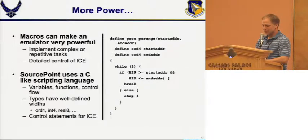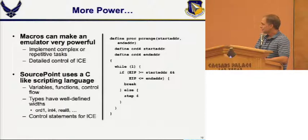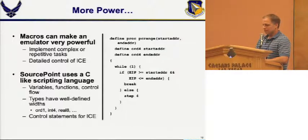Here's a simple example script illustrating standard language features: defining a function that takes typed arguments, an infinite while loop checking the EIP register to make decisions. In this case it's essentially a memory-range breakpoint — you call the function, give it a start and end address, say go, and it steps until it gets into the proper address range and stops. We step four instructions at a time to make it a little faster.